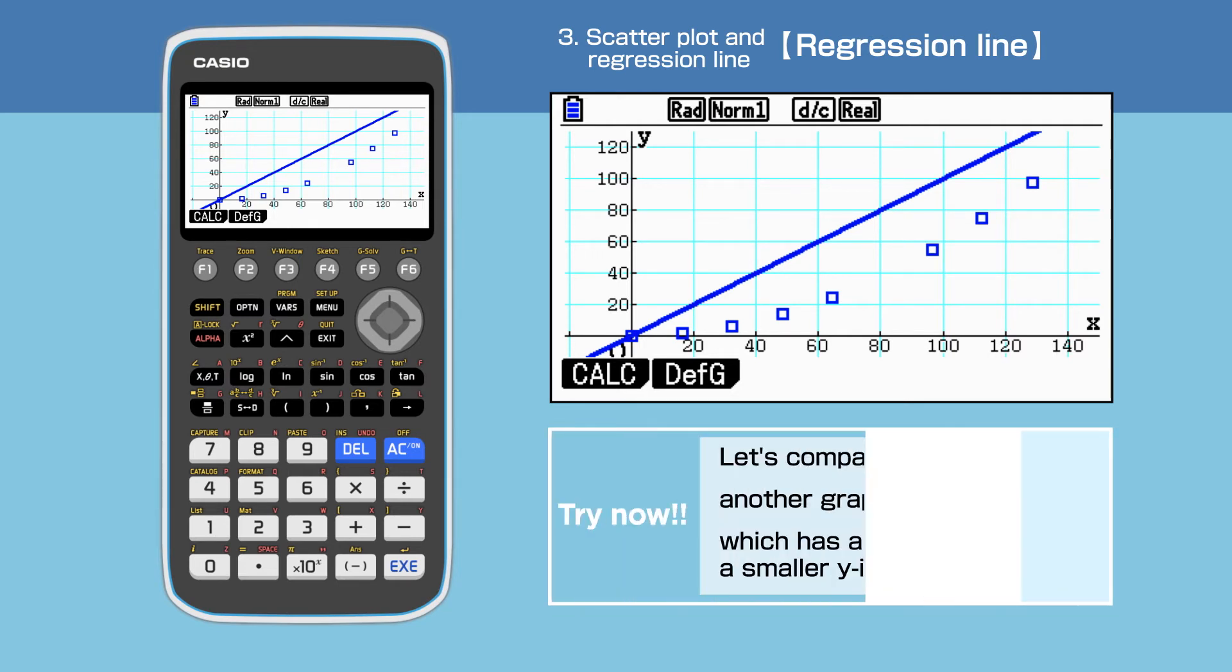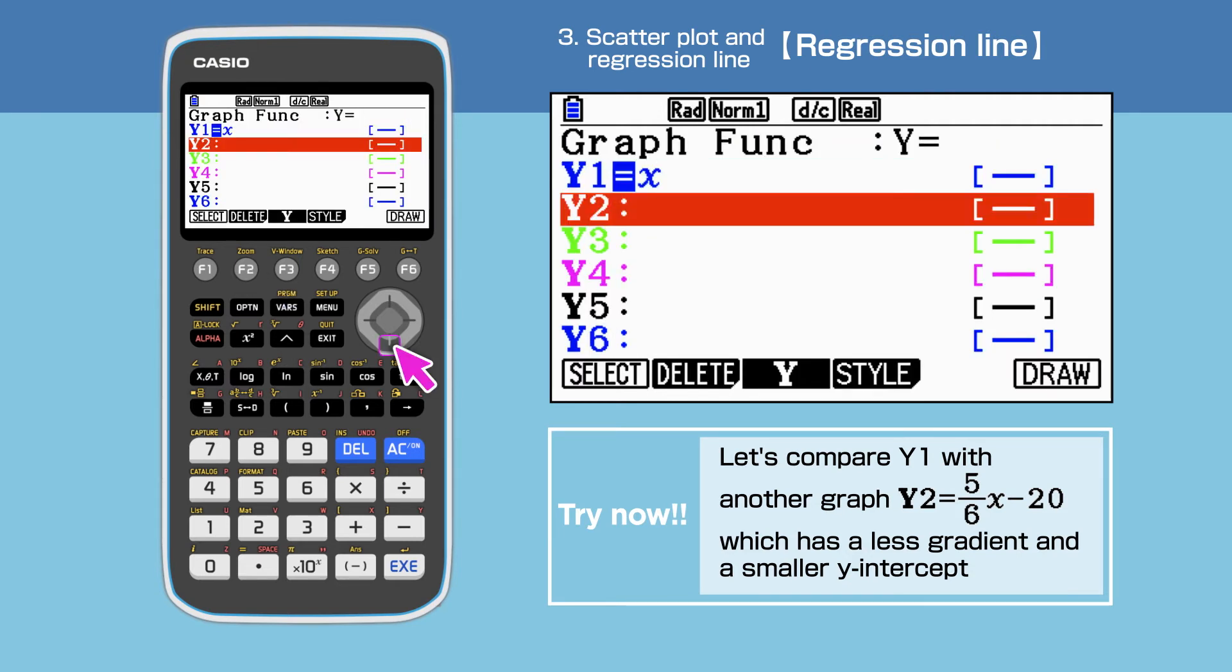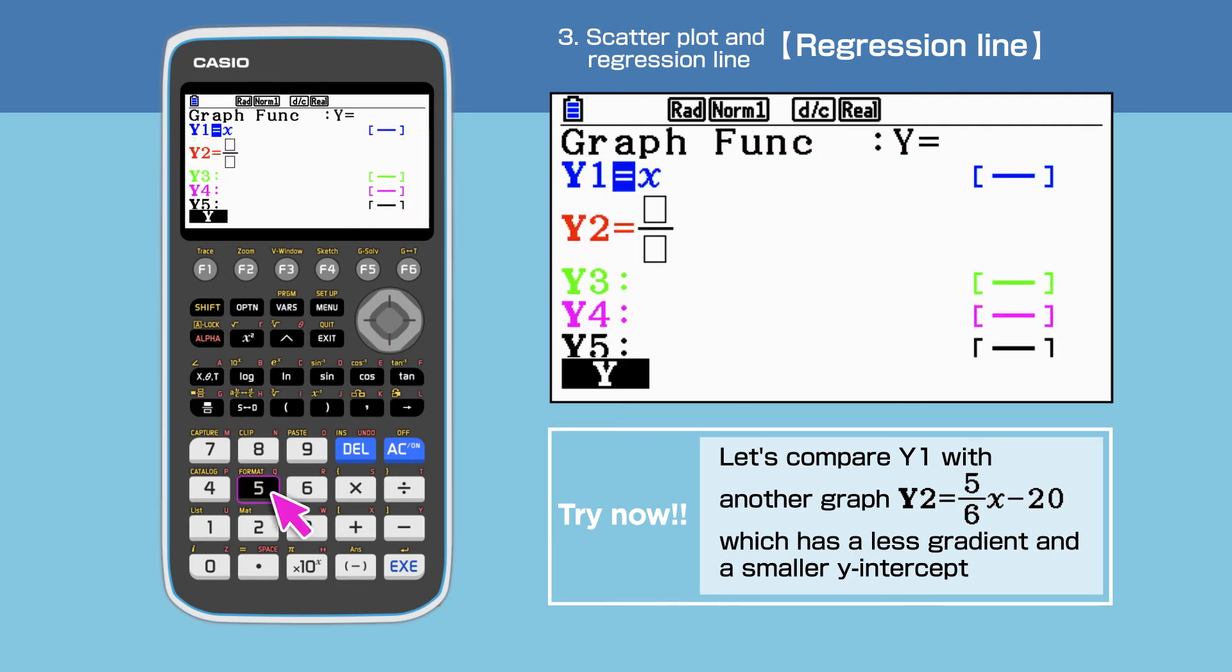We can change the values of gradient and the Y intercept so that we can get the line closer to the points. Next attempt, we try the equation Y equals 5 over 6X minus 20 in Y2.